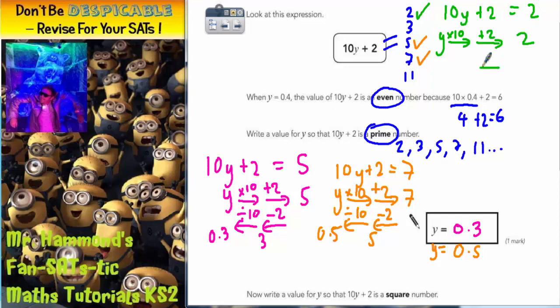So now we reverse it backwards. Opposite of add 2 is take away 2. Opposite of times 10 is divide by 10. Same method on each one. 2 take away 2 is 0. And 0 divided by 10 is still 0. So actually you could have had the answer of y equals 0. That would have also worked.